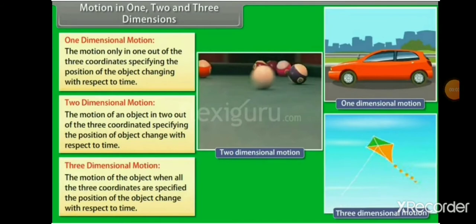In one-dimensional motion, only one out of the three coordinates specifying the position of the object changes with respect to time. In two-dimensional motion, two out of three coordinates representing the position of an object change with respect to time. In three-dimensional motion, all three coordinates are specified and all three represent the change in position of the object with respect to time.